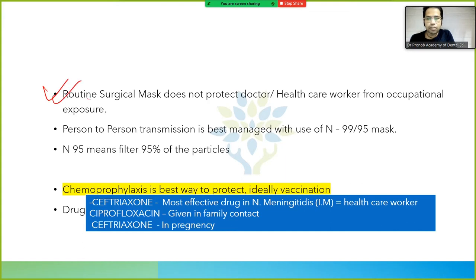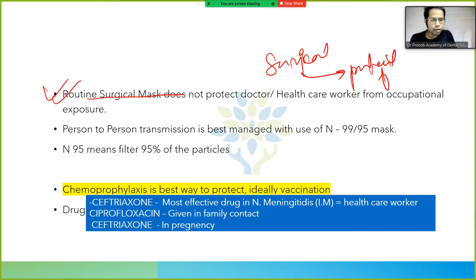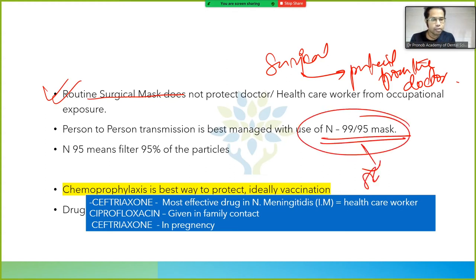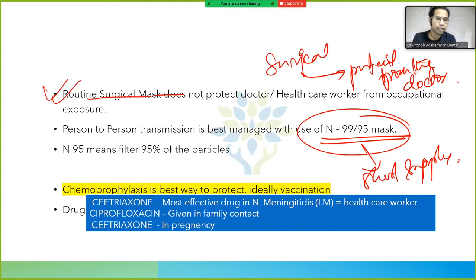Routine surgical masks protect the patient from the doctor, not the doctor from the patient. So while the doctor cannot infect the patient, the patient can still infect the doctor. The solution is to use N95 or N99 masks, though these are in very short supply and are expensive in India. Surgical masks are not sufficiently protective for the healthcare worker.